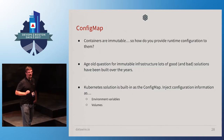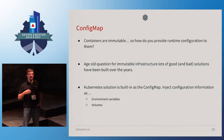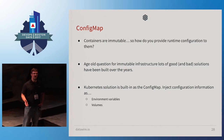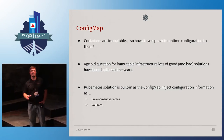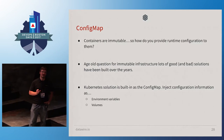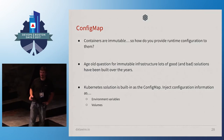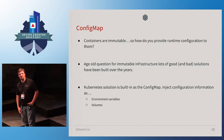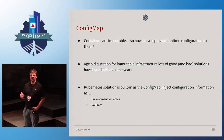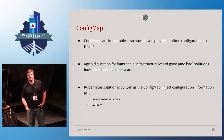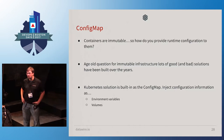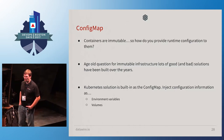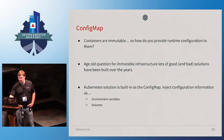At deployment time, you specify all the configuration you need and put it into Kubernetes. When a pod comes up that references a config map, Kubernetes will automatically inject all the configuration into the pod — either as environment variables, or for advanced configuration, it can lay down entire files onto the file system through a volume.